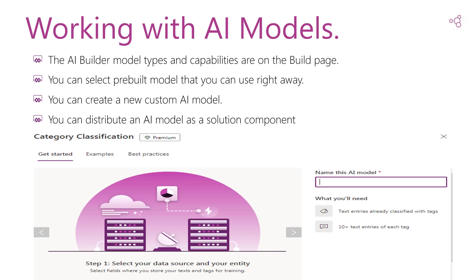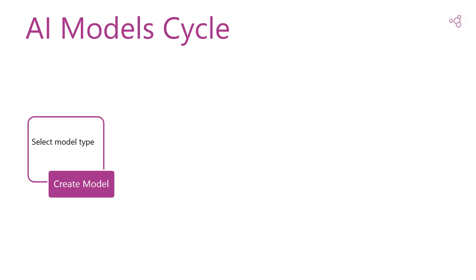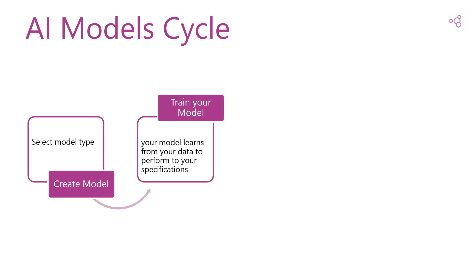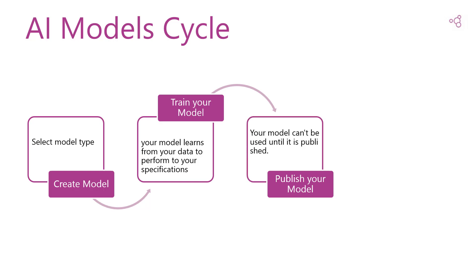Now let's list the building cycle of an AI Builder model. The first step is creating your model, in which you select your model type from the available types and create the model. After that, you have to train your model so that it learns from your data to perform to your specifications. That will take time and it depends on the size of your data. After training your model, you have to publish your model, because your model can't be used until it is published.